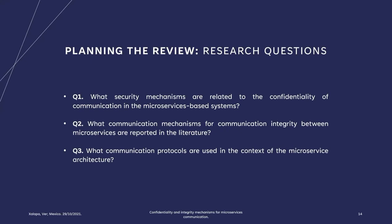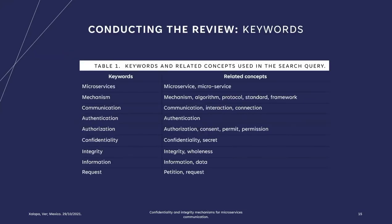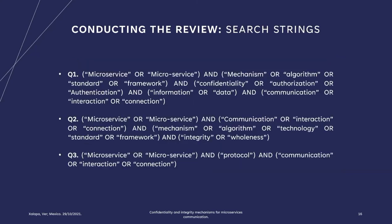To guide the review, three research questions were defined. Question 1: What security mechanisms are related to the confidentiality of communication in microservice systems? Question 2: What communication mechanisms for communication integrity between microservices are reported in the literature? And Question 3: What communication protocols are used in the context of the microservice architecture? To conduct the review, a search strategy was established by defining keywords, as shown in Table 1, and three search strings were formulated for the research questions, based on three different approaches: confidentiality, integrity, and communication protocols.